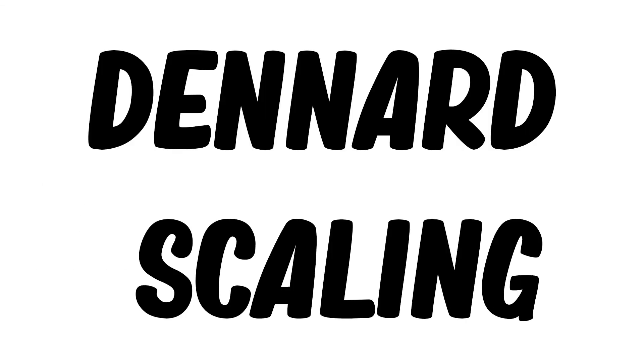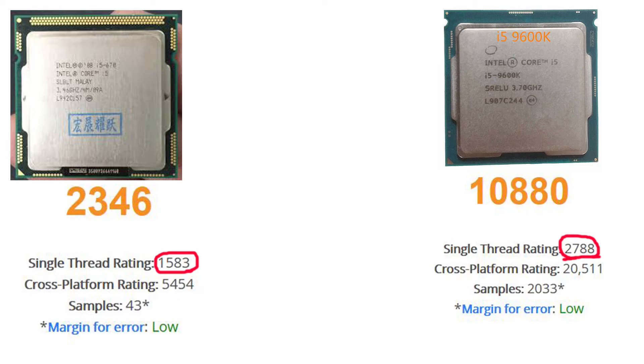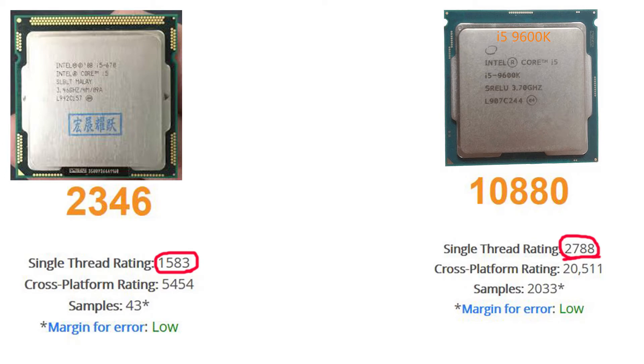Around the 2010s, clock speeds stopped increasing, meaning that the amount of clock cycles per second remained the same. This isn't to say that single-core performance has stagnated, as significant improvements have been found in clock cycle efficiency, which means that more can be done within each cycle.